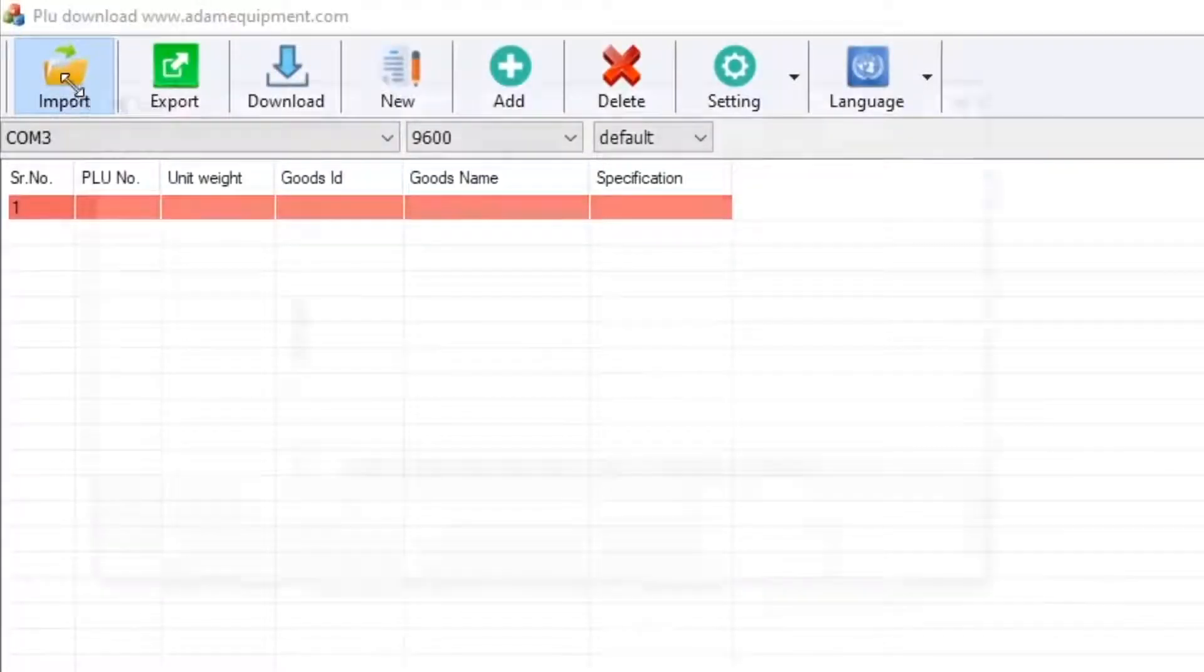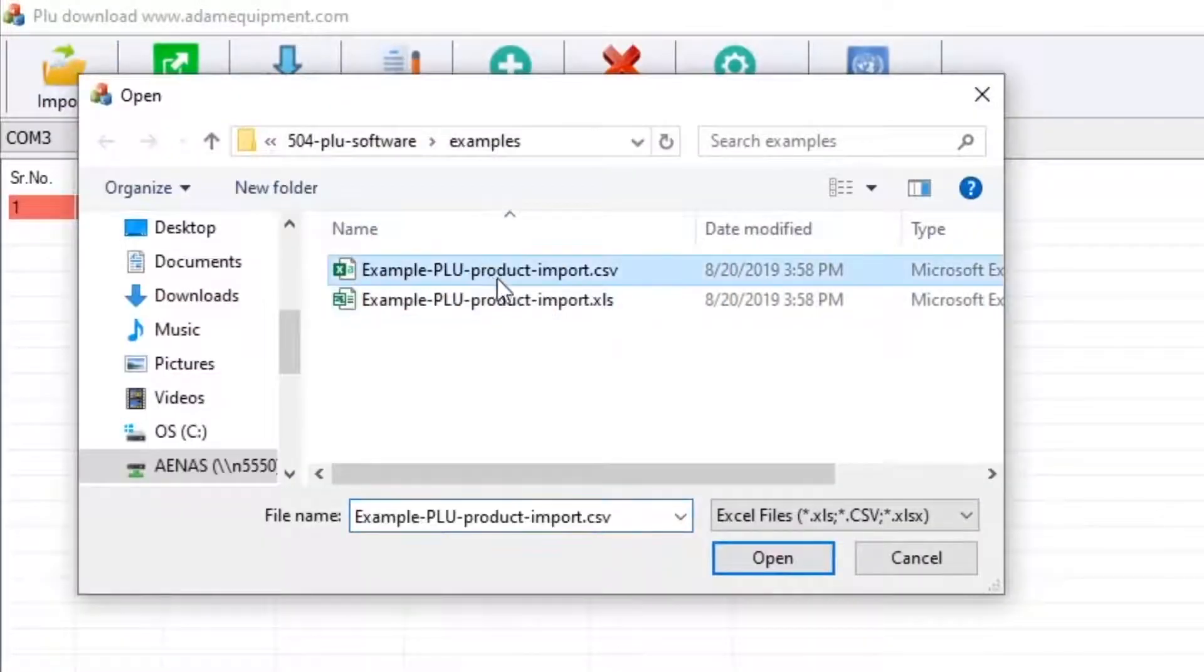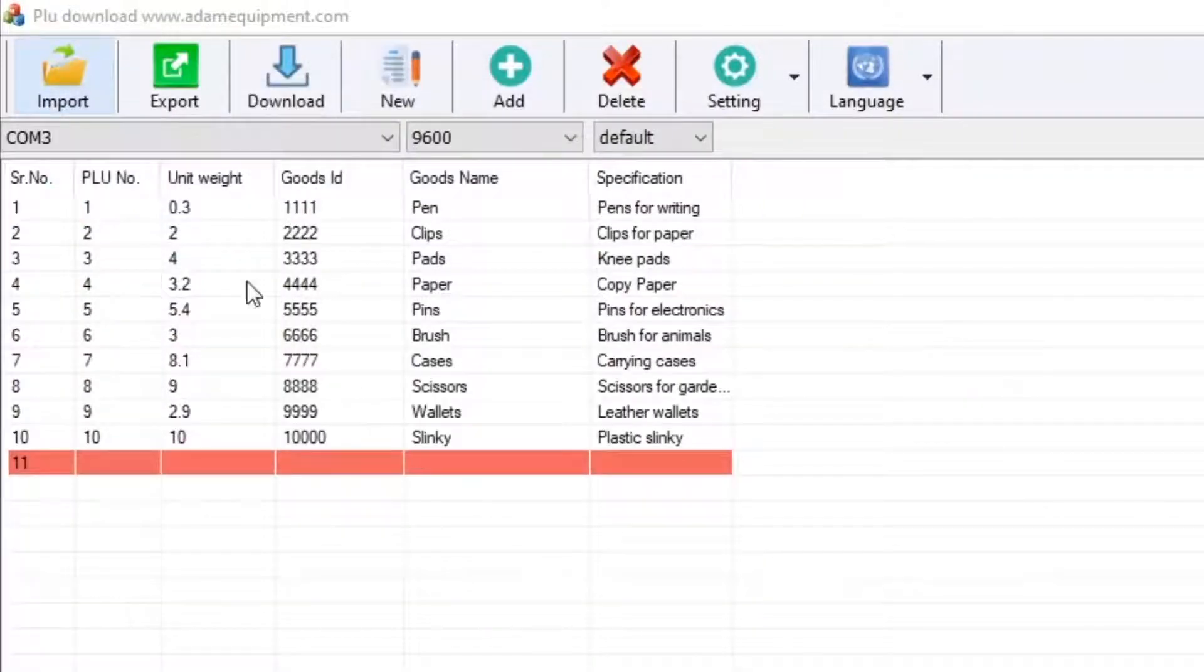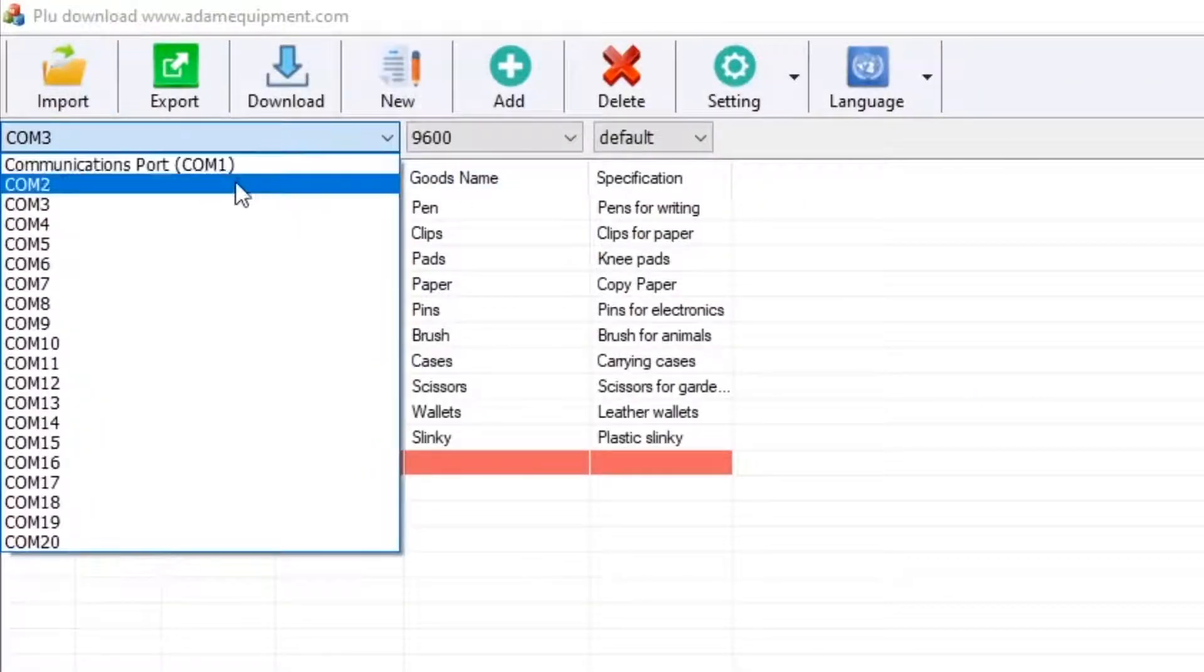For convenience, the indicator stores more than a thousand PLUs, which allows the user to save product information such as name and item number.